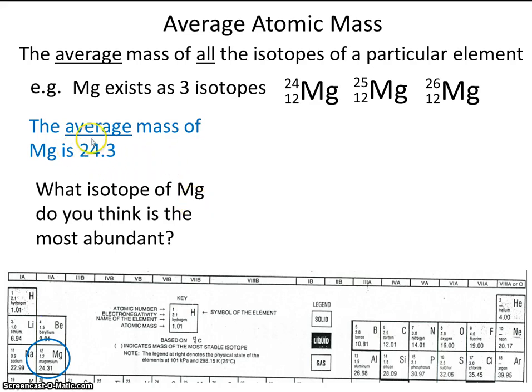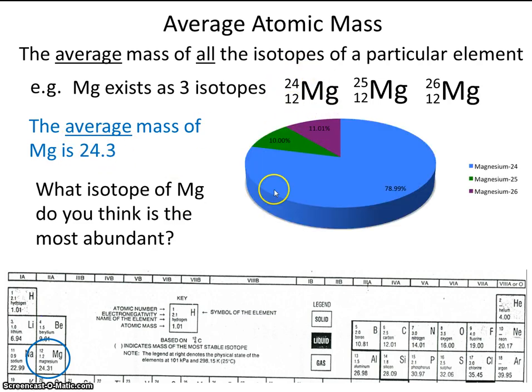Well, based on the average, I would say magnesium-24 is the most abundant. And it turns out that's definitely true.